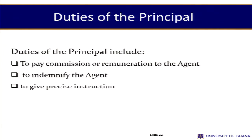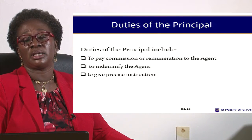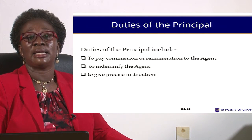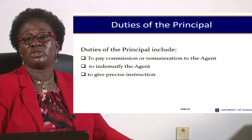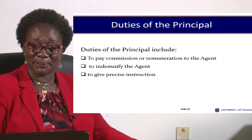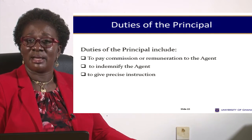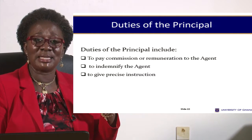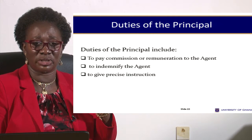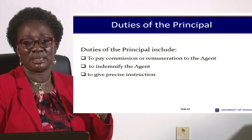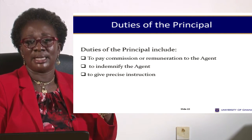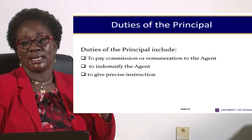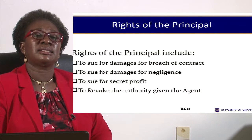The principal's duties include paying the agent's commission or remuneration, indemnifying the agent as discussed, and giving precise instructions. If the instructions are not precise, not certain, not clear, but rather incomplete and ambiguous, then the agent may not be held liable for his actions. Therefore, instructions given by the principal must be clear, precise, and certain — they should not be ambiguous, uncertain, or imprecise.